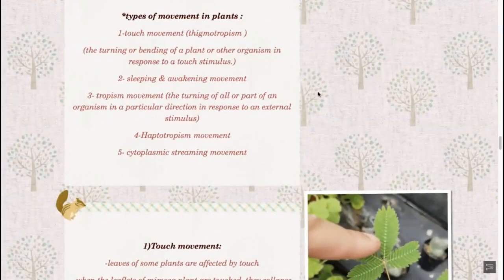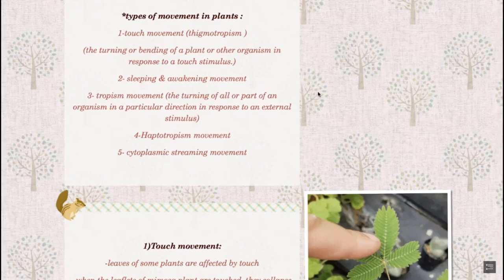There are several types of movement in plants. There can be touch movement - the plant is touched and this is called thigmotropism. Thigmotropism involves turning or bending of the plant or other organism in response to a touch stimulus. There is turning or bending, a movement occurs, or it tilts once touched - in response to a touch stimulus.